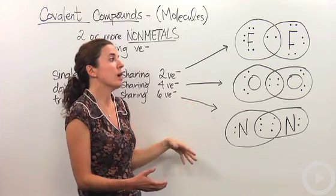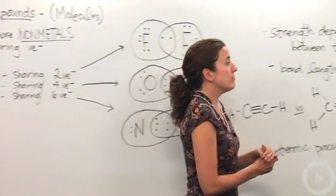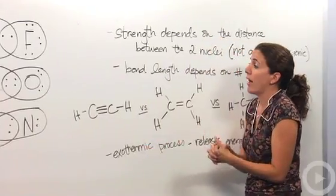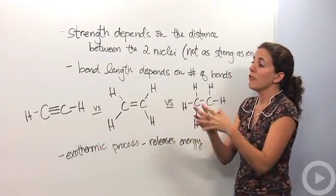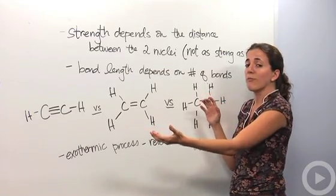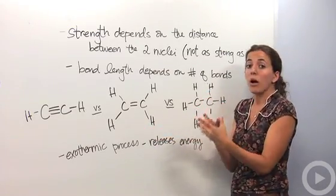So let's talk about the characteristics of these covalent bonds and how they work together. The strength of them, how strong they are within each other, depends on the distance between the two nuclei. The further they are, the further the nuclei are from each other, the easier they are to break. So the closer they are, the stronger that bond is.